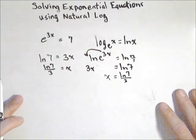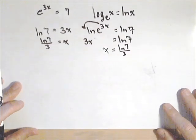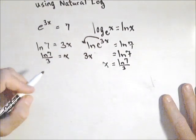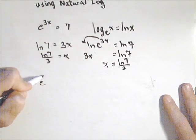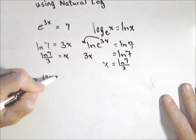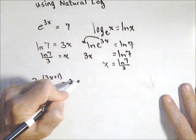So we've got two different ways we can think about solving that. I want to look at one other example with just a little bit more going on. Let's say we have 7e to the 3x plus 1 minus 2 equals 12.